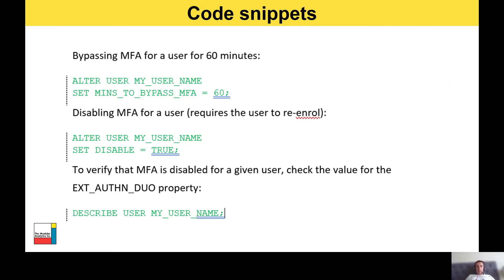Here are a couple of code snippets. To bypass MFA for a user for 60 minutes, use the ALTER USER command for their username and set the MINS_TO_BYPASS_MFA parameter to 60. To disable MFA for a user — note that the user will be required to go through the full re-enrollment process again — you simply set DISABLE_MFA to TRUE. To verify that MFA is disabled, you run DESCRIBE USER with the username; in the large list of properties returned, check the EXT_AUTHN_DUO property — if it's false, MFA is disabled.